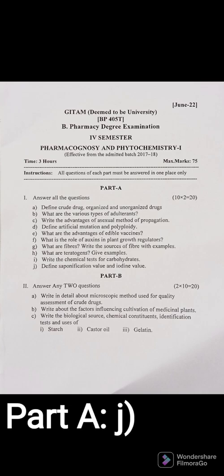Question 1J: Define saponification value and iodine value — this question is from the lipid section. Saponification value is the number of milligrams of potassium hydroxide (KOH) needed to neutralize the fatty acids obtained by complete hydrolysis of one gram of an oil sample, such as coconut oil, chaulmoogra oil, olive oil, or cashew oil. Iodine value is the number of grams of iodine absorbed by 100 grams of a fat or oil sample.